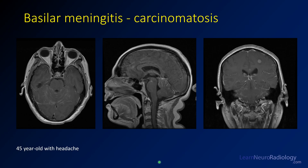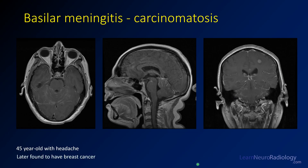Here is another basilar meningitis case. On axial post-contrast images there is very thin leptomeningeal enhancement along the folia of the cerebellum, confirmed on sagittal imaging with enhancement in the interpeduncular cistern, along the surface of the pons, and coating the superior cerebellum. Coronal imaging confirms this and also shows a parenchymal nodule. This was a 45-year-old with headache who turned out to have breast cancer — leptomeningeal carcinomatosis from metastatic intracranial disease.